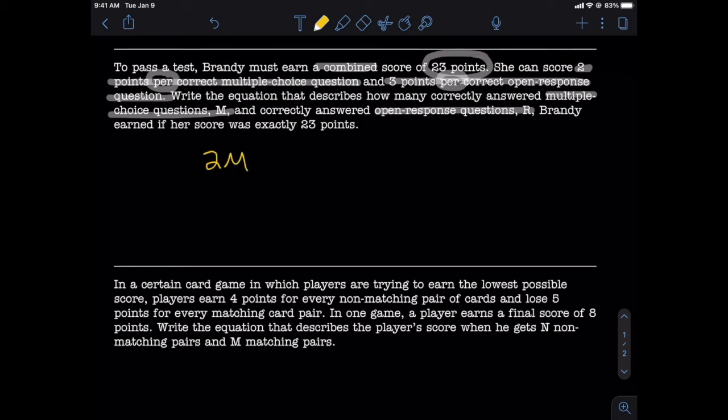Likewise, if 3 goes with open response, and so does R, then we're going to have a 3R in our equation like we have here. And if we add the scores of each of these together, guess what we're going to get at the end of the day? 23.